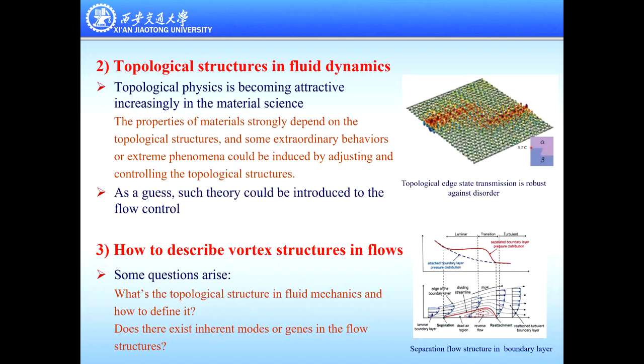But problems are arising. The first is: what is the topological structure in fluid mechanics and how to define it? The second is: does there exist inherent modes or genes in the flow structures? If this is true, we can believe that if we understand the flow structures in fluid dynamics, we understand the flow — even for more complicated phenomena such as turbulence.